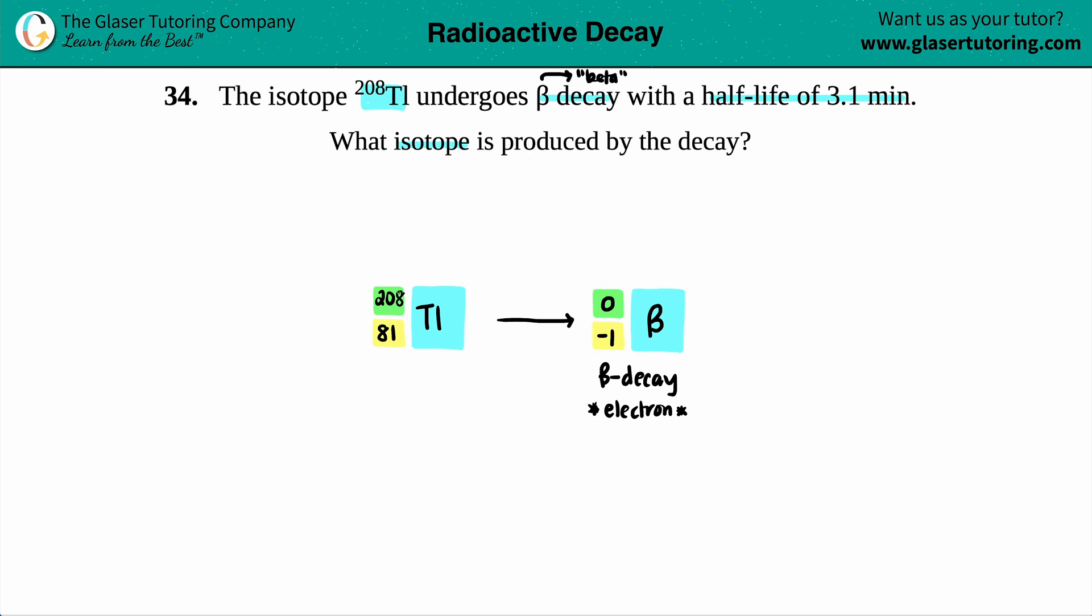But now your mass numbers on the top across your yield sign have to equal, and the atomic numbers across the yield sign have to equal. So that means I'm going to have another isotope, and that's the isotope that is going to be produced—we're looking for this guy.